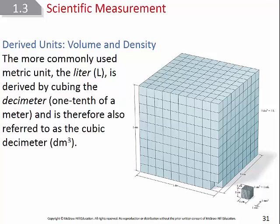If I took one-tenth of a decimeter, that gives me a centimeter — one-hundredth of a meter. One centimeter cubed is equal to one milliliter. So the key takeaway is: one liter equals one cubic decimeter, and one milliliter equals one cubic centimeter.